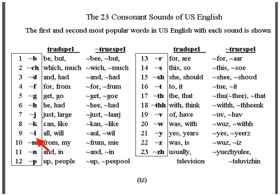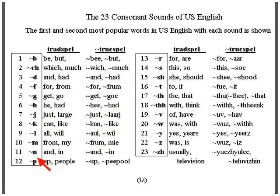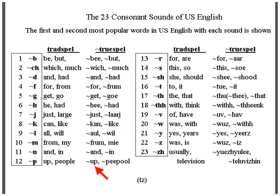The L sound, spelled by the letter L, as in 'all' and 'will.' The M sound, spelled by the letter M, as in 'from' and 'my.' The N sound, spelled by the letter N, as in 'and' and 'in.' The P sound, spelled by the letter P, as in 'up' and 'people.'